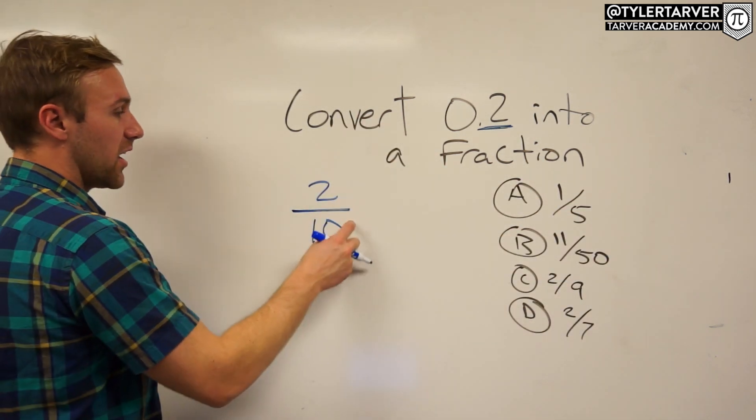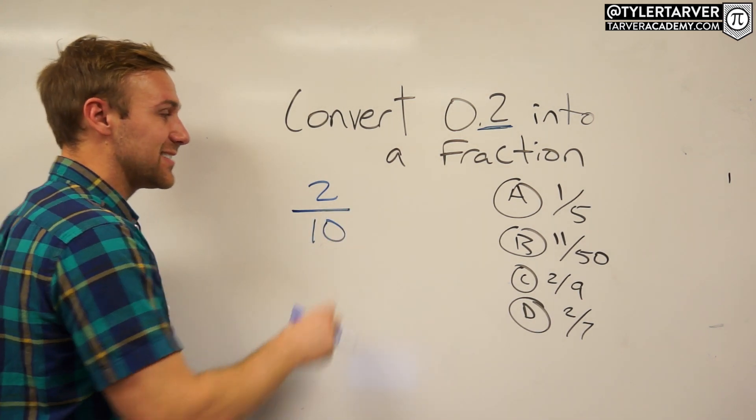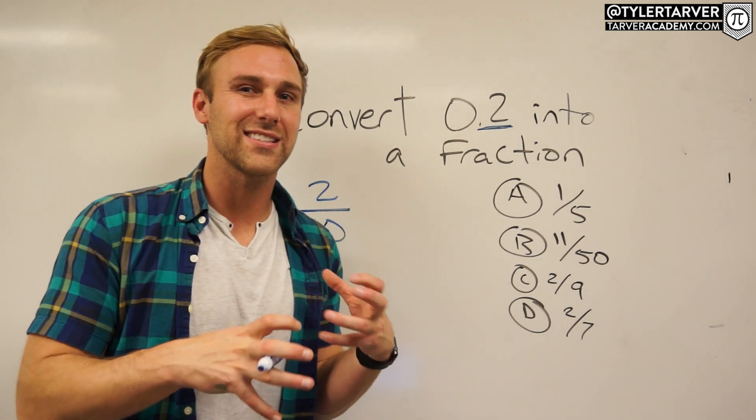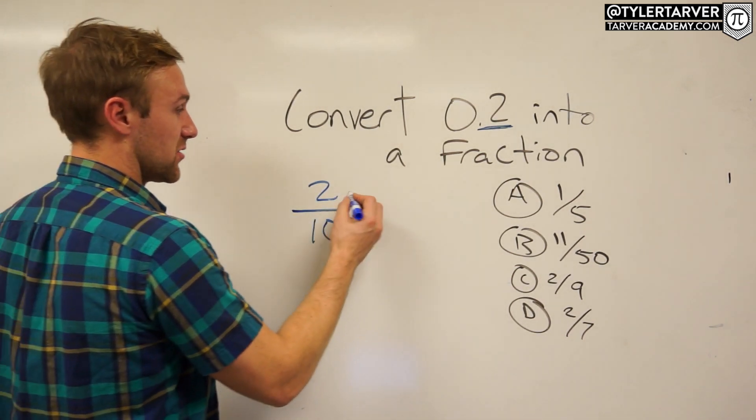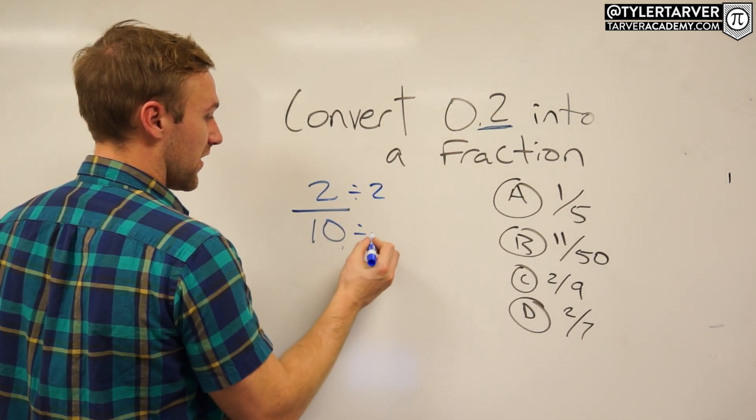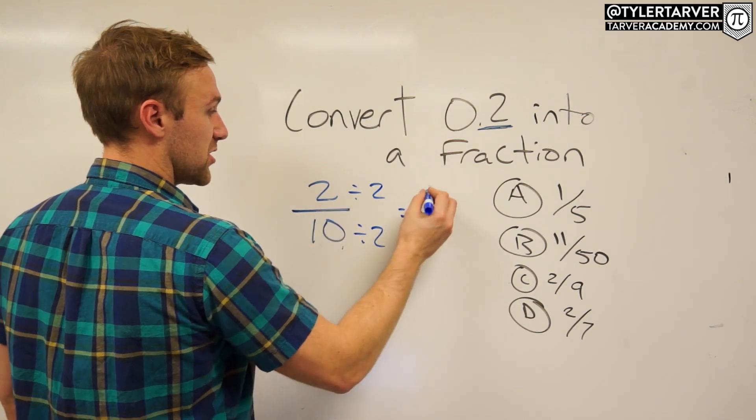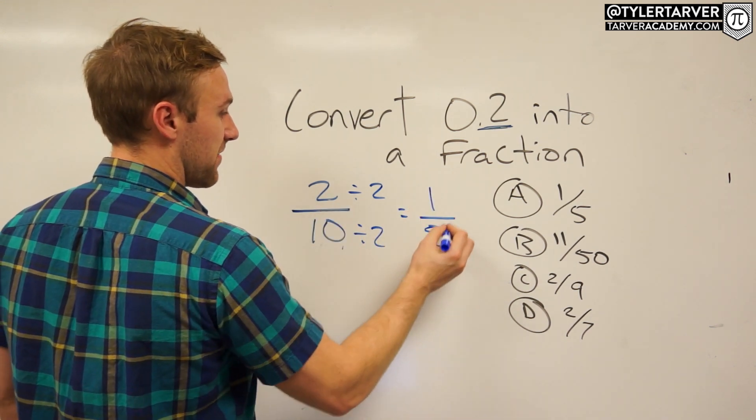One number goes into 2 and 10. What's the greatest common factor? What's the greatest thing that goes into both of those? Hint: the top number. 2 goes into both those, so I divide the top by 2, divide the bottom by 2. 2 divided by 2 is 1, 10 divided by 2 is 5.